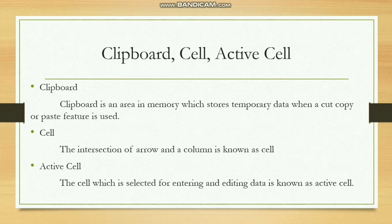What is a cell? The intersection of a row and a column is known as a cell. What is an active cell? The cell which is selected for entering and editing data is known as the active cell. The cell address of the active cell will be displayed on the top left-hand side, just below the clipboard area.